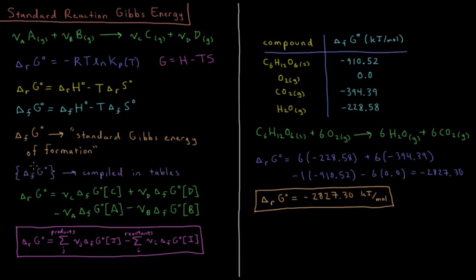So these values for standard Gibbs energy of formation, those are things that are compiled in tables. You can usually look in the appendices at the end of textbooks or various online pages and find compilations of these for common chemical species.